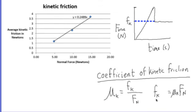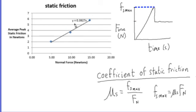And when we rearrange that equation, we see that the kinetic frictional force is equal to the coefficient of kinetic friction times the normal force. And as we said before, we see here that the kinetic friction coefficient is about 0.25, and the static friction coefficient is about 0.39.